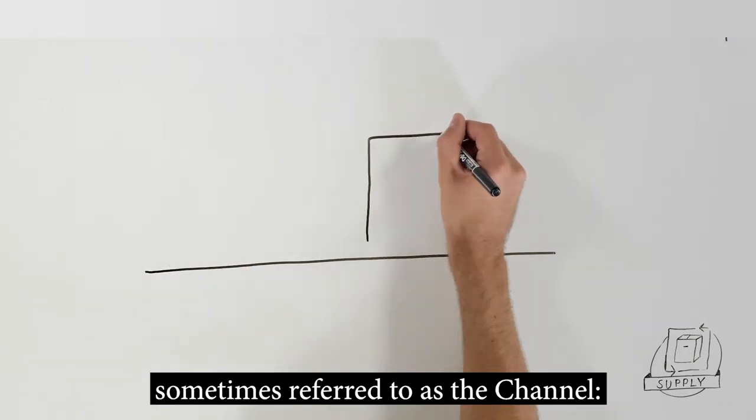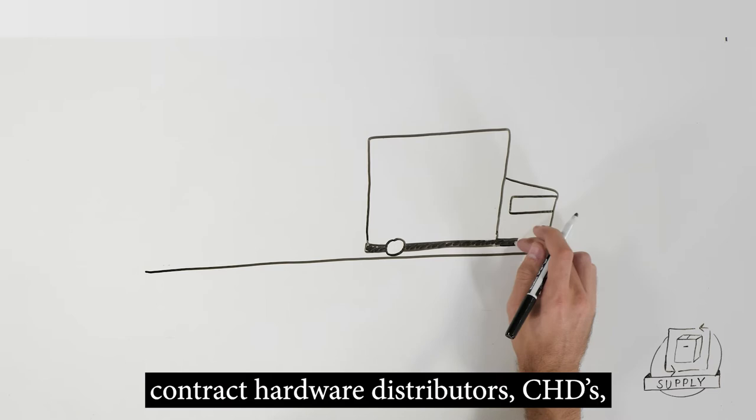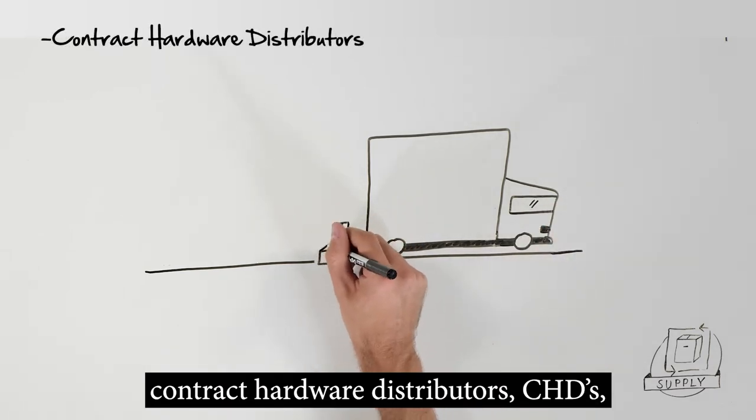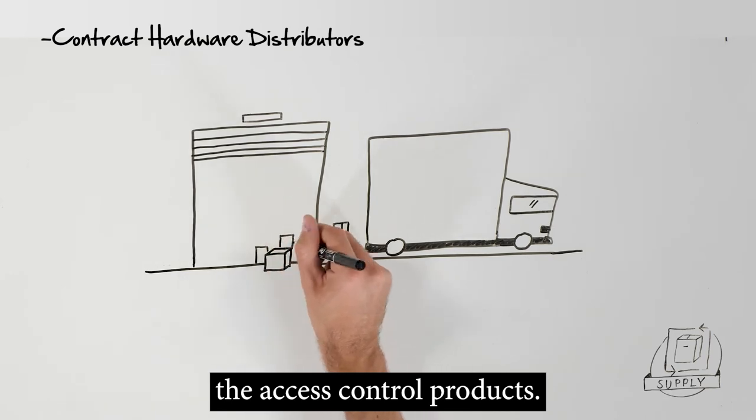As to the supply function, sometimes referred to as the channel, for new construction projects, contract hardware distributors supply the doors and hardware and sometimes the access control products.